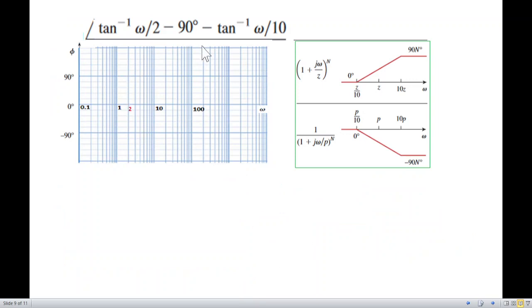For the angle plot, the corner frequencies are one-tenth of Z and one-tenth of P. Before that value, it's zero. The slope starts at one-tenth of P. Up to 10 times the value, 10Z or 10P, the slope is 90 degree, plus 90 or minus 90.